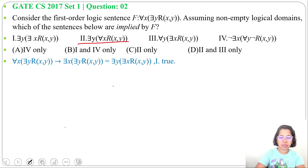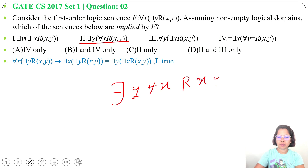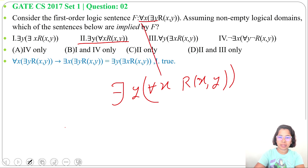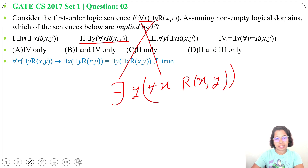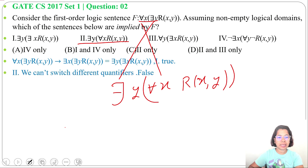Next, statement 2: there exist Y, for all X, R of X, Y. Here the positions are switched — for all X has moved and there exist Y has moved. When both quantifiers are different, we cannot switch them; we cannot alter the position. If we do alter it, the meaning changes. This statement is false — we cannot switch different quantifiers.